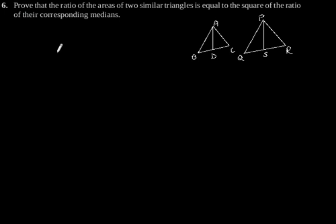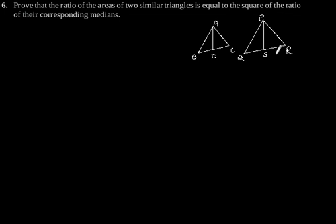Exercise 6.4, Question number 6. Prove that the ratio of the areas of two similar triangles is equal to the square of the ratio of their corresponding medians. So let us consider this figure.